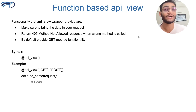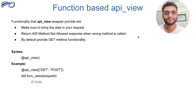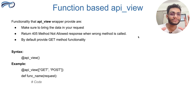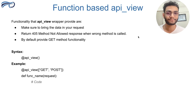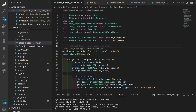Now you might have got the gist of what the api_view decorator is. Let's go to our IDE and understand how this works and how many lines of code you will save with this decorator.